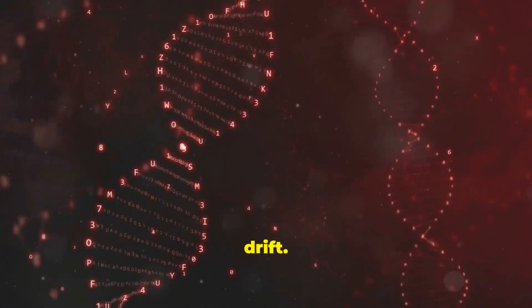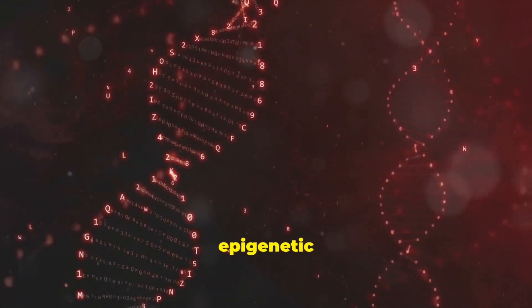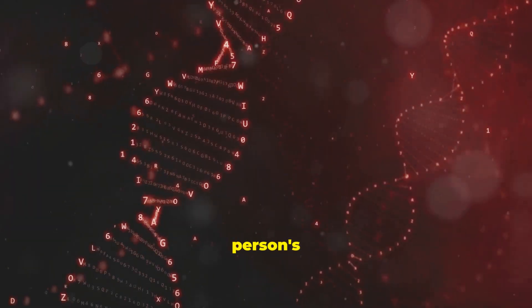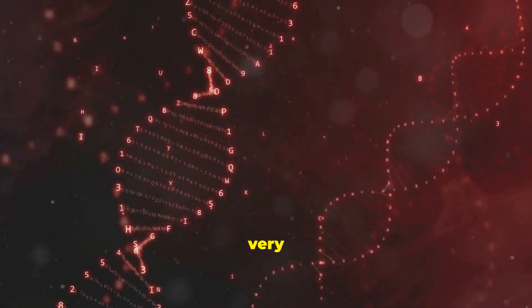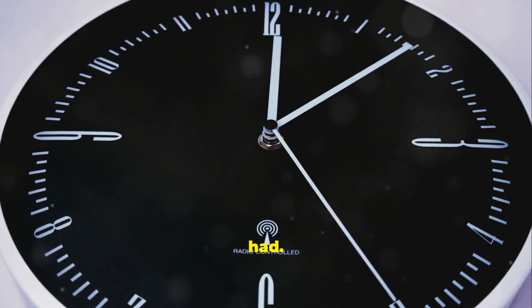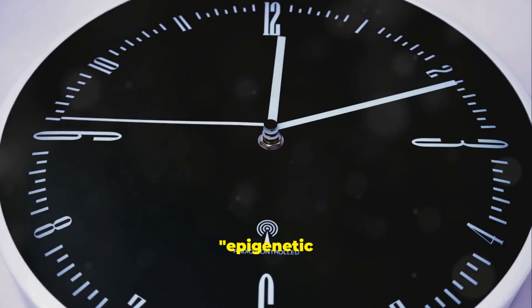Scientists can actually measure this drift. By looking at specific epigenetic markers across the genome, they can calculate a person's biological age, which can be very different from their chronological age, the number of birthdays they've had. This is the epigenetic clock.